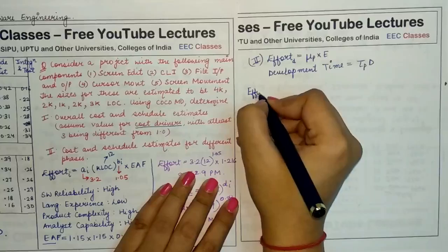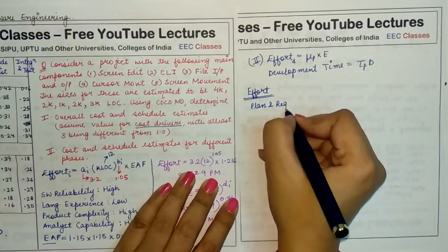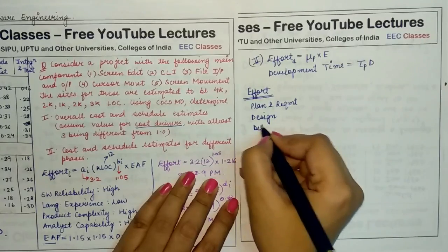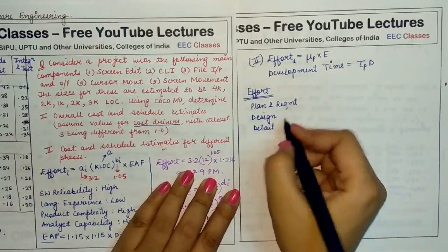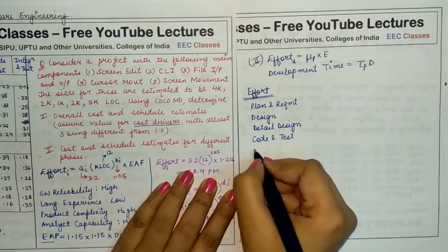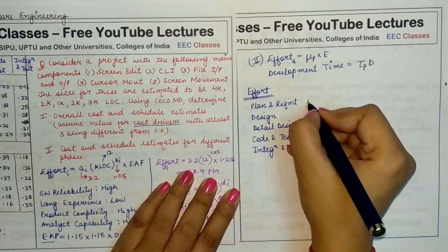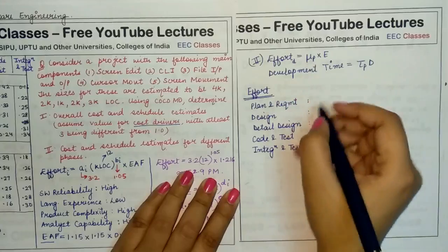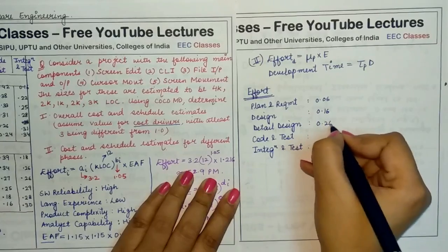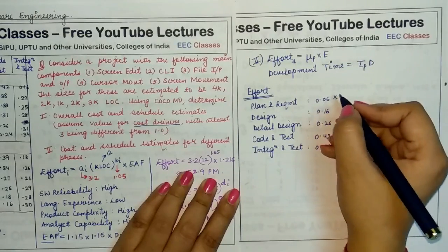To calculate effort for each phase, multiply the respective mu_p by the total effort of 52.9 person-months. For planning and requirement: 0.06 × 52.9; system design: 0.16 × 52.9; detail design: 0.26 × 52.9; code and test: 0.42 × 52.9; integration and test: 0.16 × 52.9. These values are in person-months.